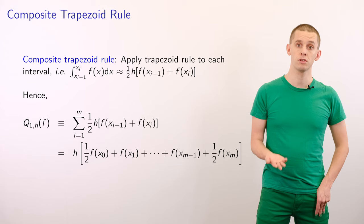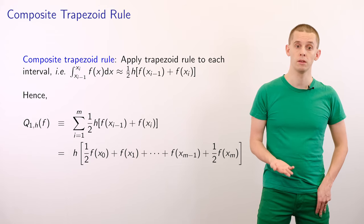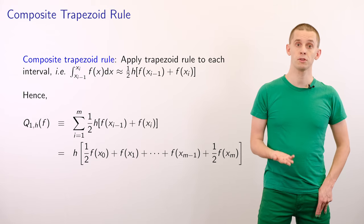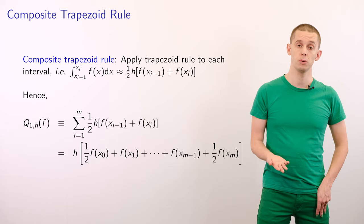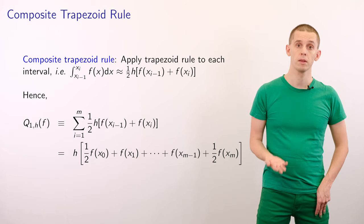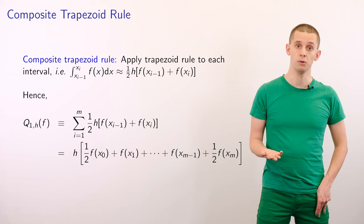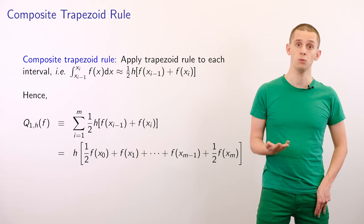In this sum, a number of terms combine together, and we end up with h times samples of our function from f(x_0) up to f(x_m). The two values at the ends of the interval, x_0 and x_m, will have a half weighting, and all of the terms in between will have a weighting of 1.